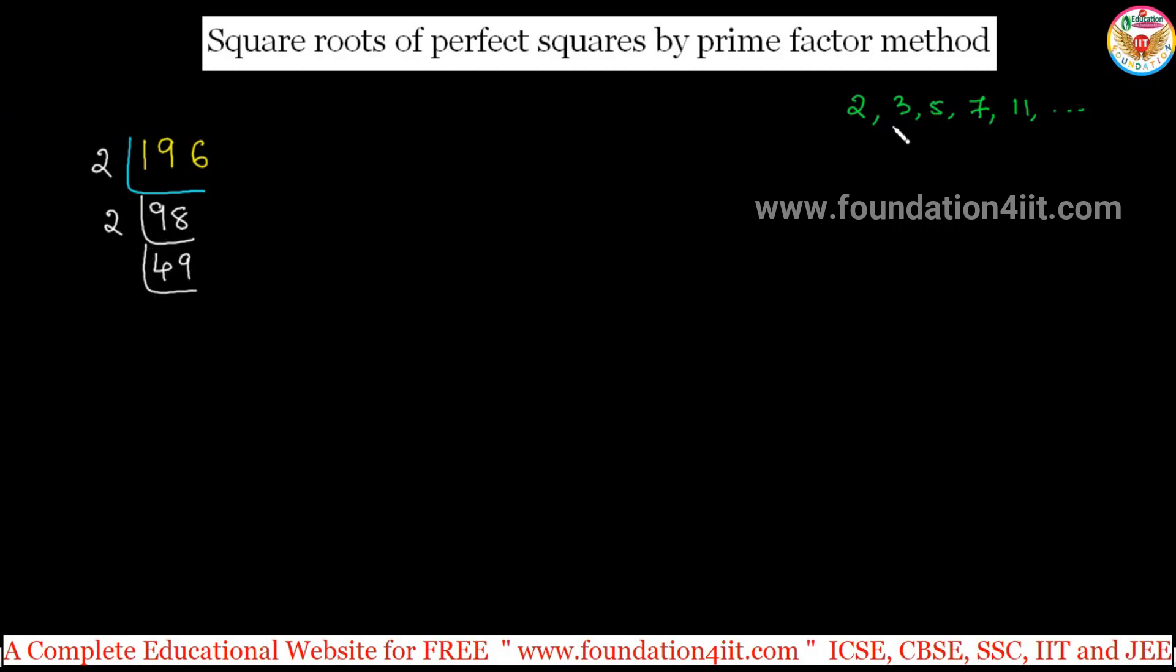Next prime number you have to take 3. 49 is not in 3 table, next 5 not, so 7. 7 times 7 is 49, again 7 into 1 is 7. So finally, 196 is product of the prime numbers, that is 2 into 2 into 7 into 7.